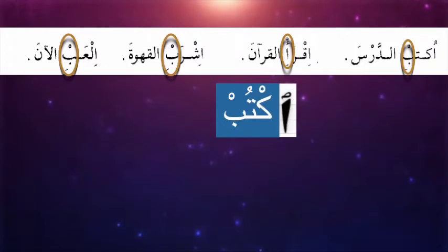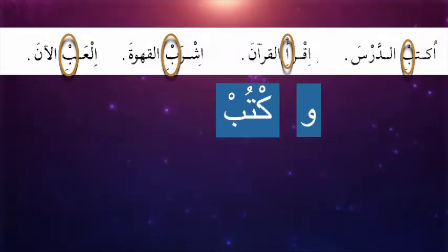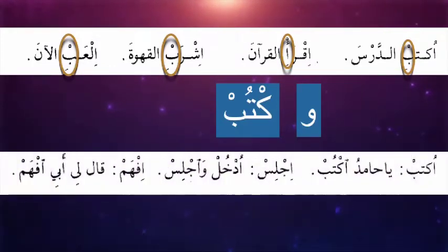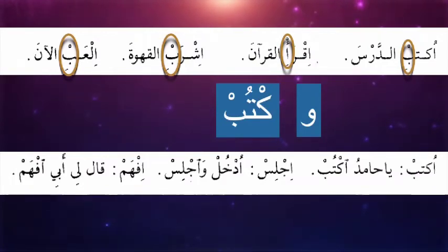We know when these Fa'al Amr begin with Hamzatul Wasal. For example if we say Uqtub, Hamzatul Wasal has a special characteristic: whenever a letter comes in front of it, the sound of the Hamzatul Wasal disappears. So how do we pronounce it? We just say Vaktub. But we know when we are pronouncing Vaktub ending with the Sukoon, that means it is Amr. It is written with Hamzatul Wasal but it is not pronounced. For example: Uqtub ya haami — duqtub. The Hamzatul Wasal sound is not produced, so there is assimilation of the two sounds.